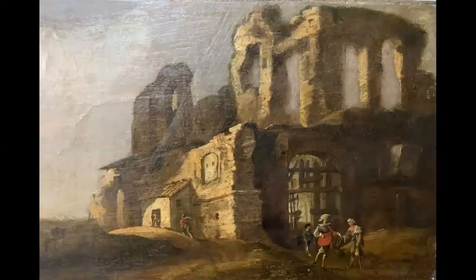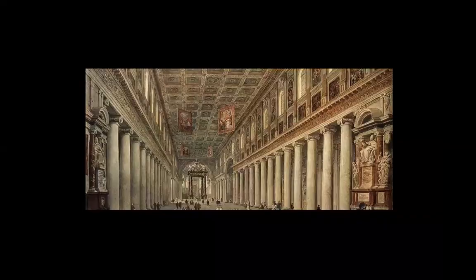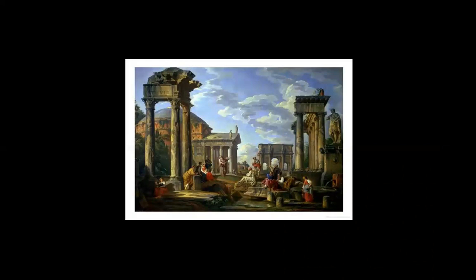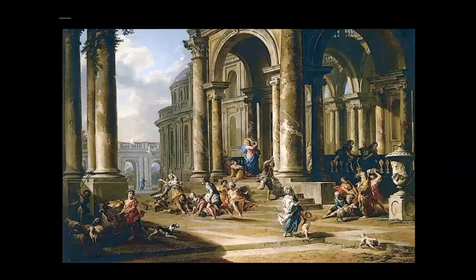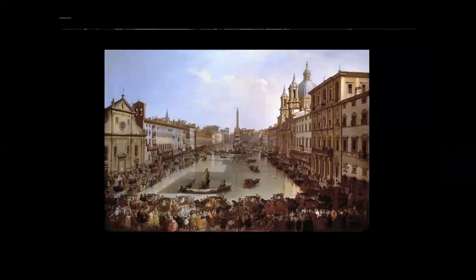Ruins, churches — fallen and not fallen — temples, madness, human madness. We build and then we destroy spectacles, riches, people, animals, columns, temples and churches.